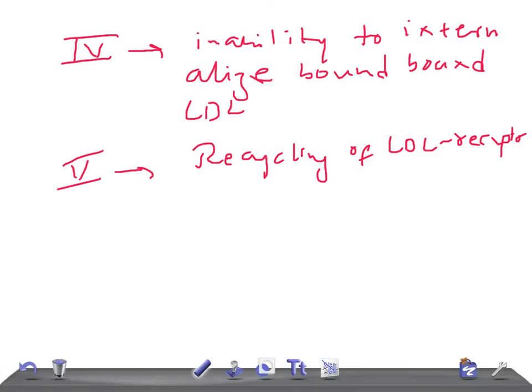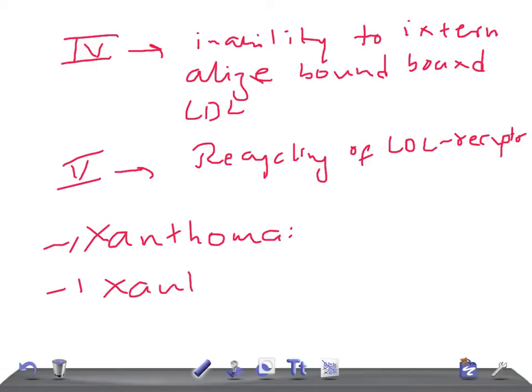The clinical presentation includes elevated serum cholesterol. Heterozygotes have cholesterol levels two to three times the normal, while homozygotes have levels five to six times normal. Other important clinical features for USMLE Step 1 and Step 2 CK include skin xanthomas — collections of lipid-laden macrophages — and xanthomas around the eyes.